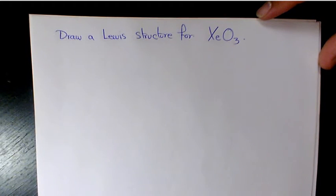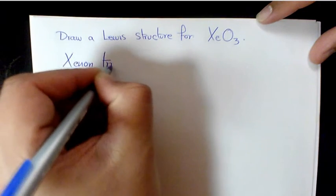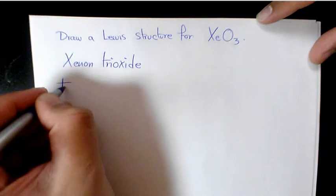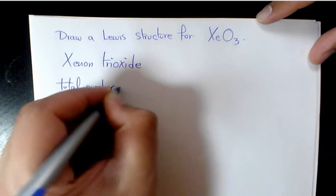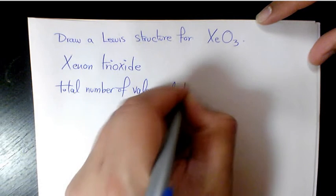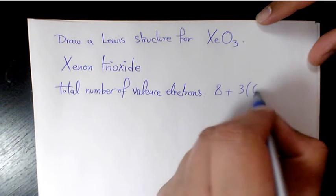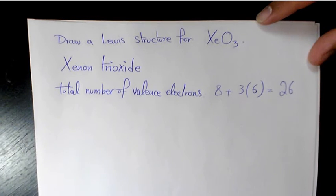What's up guys, this is Massey, welcome to another video. In this video I want to show you how to draw a Lewis structure for XeO₃, which is also called xenon trioxide. First of all, we need to find out the total number of valence electrons, which will be 8 plus 3 times 6, which is 8 plus 18 — that's going to be 26 electrons.